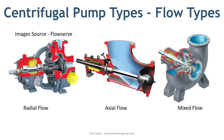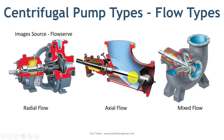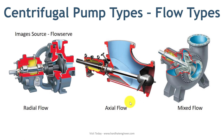When the fluid flows parallel to the pump shaft, it is called an axial flow pump. In this type, liquid moves parallel to the pump shaft and passes through the impeller — an action that resembles a propeller. This pump is useful when handling a large amount of fluid with very little pressure. Dewatering pumps and water circulation pumps are everyday use cases of the axial flow pump.